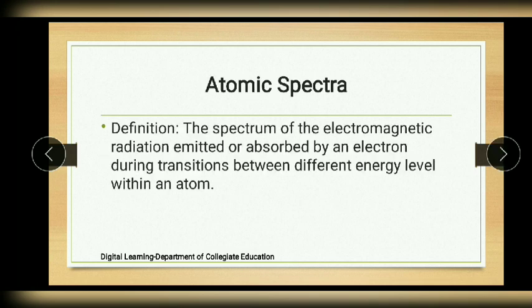Atomic spectra is defined as the spectrum of the electromagnetic radiation emitted or absorbed by an electron during transitions between different energy levels within an atom.